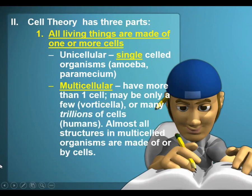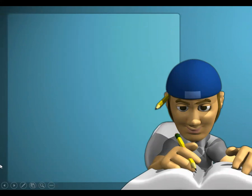Or something could be multicellular — it can have more than one cell. There's an organism called a volvocella that only has a few cells, but most multicellular organisms have trillions of cells. Almost all structures in multicellular organisms are made of or by cells.